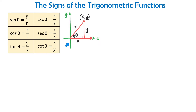We also have angle theta in standard position whose terminal side passes through this point. If we draw a perpendicular down to the x-axis, then we have formed a right triangle. In this triangle, one side is x, the other one is y, and the hypotenuse is r. Now let's review the trigonometric functions.